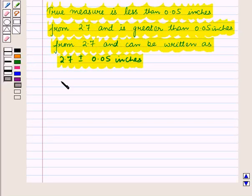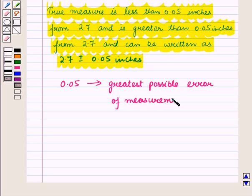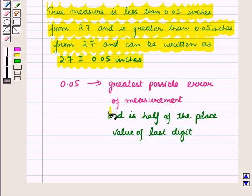The true measure is no more than 0.05 inches from 2.7 and can be written as 2.7 plus or minus 0.05 inches. The value 0.05 is called greatest possible error of measurement and is half of the place value at the last digit.